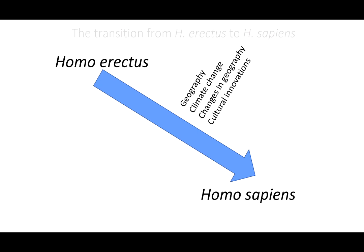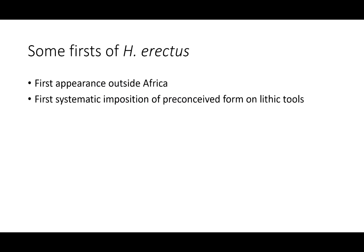Let's start at the beginning by learning more about Homo erectus, and then we'll work through the evidence that elucidates the transition from Homo erectus to Homo sapiens. With every new taxon, we see characteristics that by definition did not exist in earlier or other taxa. The firsts that we see with Homo erectus include two things we've already mentioned: first, this is the first appearance outside of Africa; and second, this is the first systematic imposition of preconceived form on lithic tools.